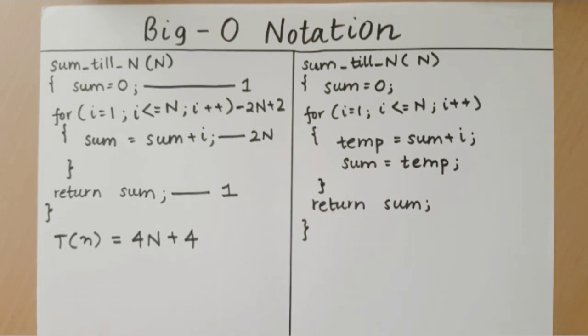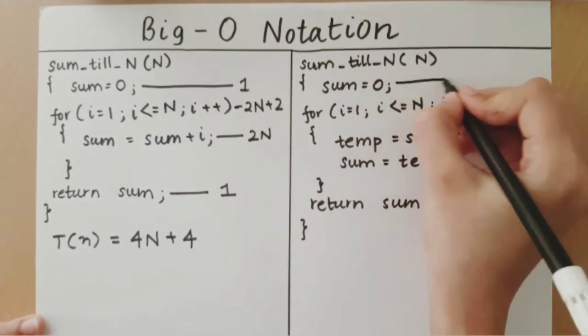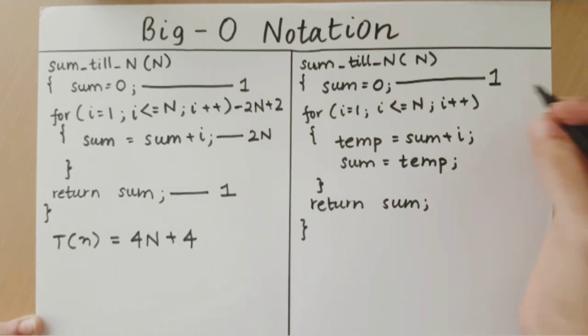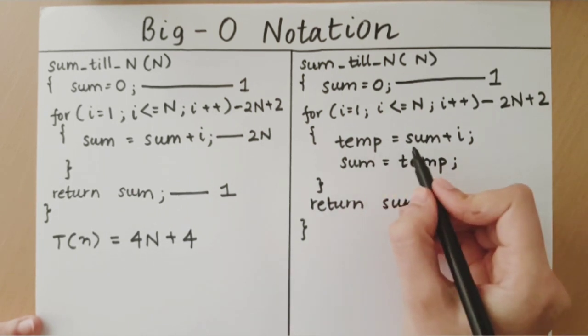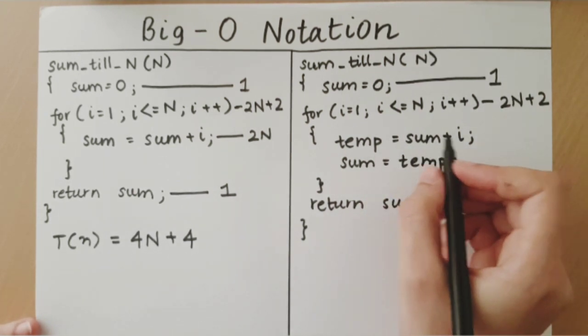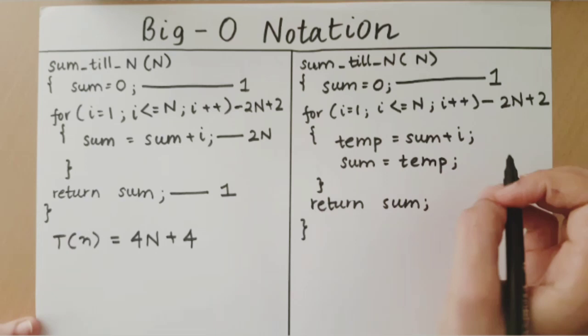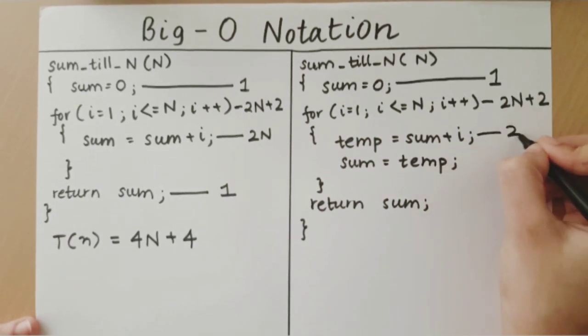Now, in the second implementation of the same logic, the first step takes 1 unit of time. The loop is exactly the same, so it will take 2n plus 2 time. This step, which on its own, will take 2 units of time, occurs n times, so this will be 2n.